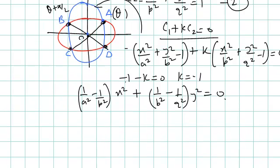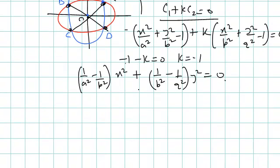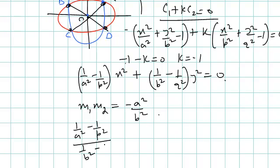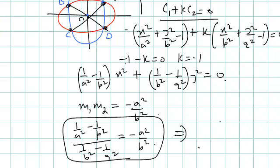With k = −1, we get the equation of the pair of lines AC and BD. Since this is a pair of conjugate diameters of the first ellipse, we apply the condition m1·m2 = −a²/b². The ratio m1·m2 from the pair of lines equation equals (1/a² − 1/b²) / (1/b² − 1/q²) set equal to −a²/b². Simplifying this gives the condition a²/p² + b²/q² = 2. If you're comfortable with the first approach, there's no need to use this alternate method, but the concept of the family of conics may be useful in other questions.